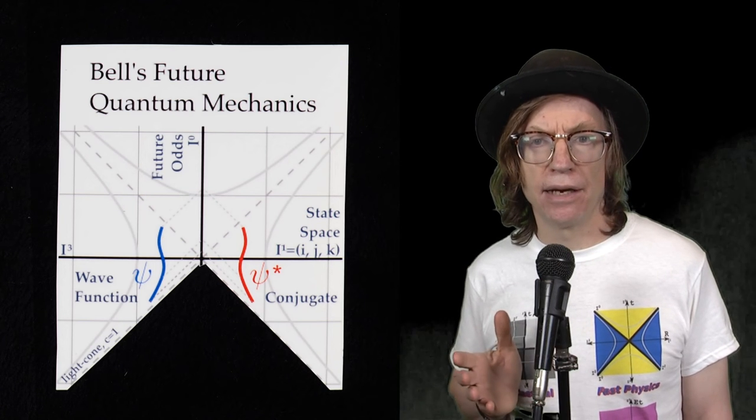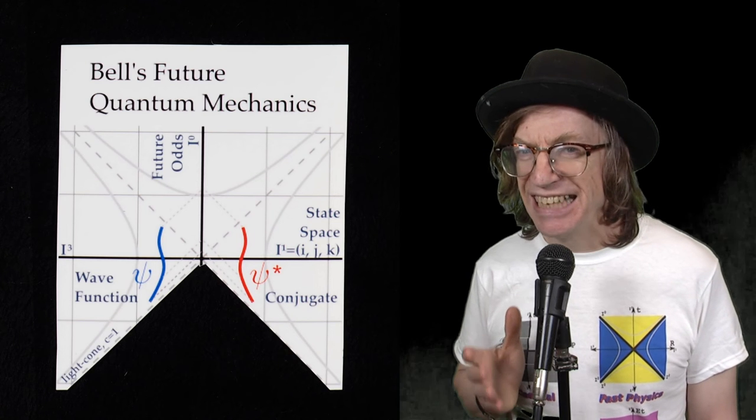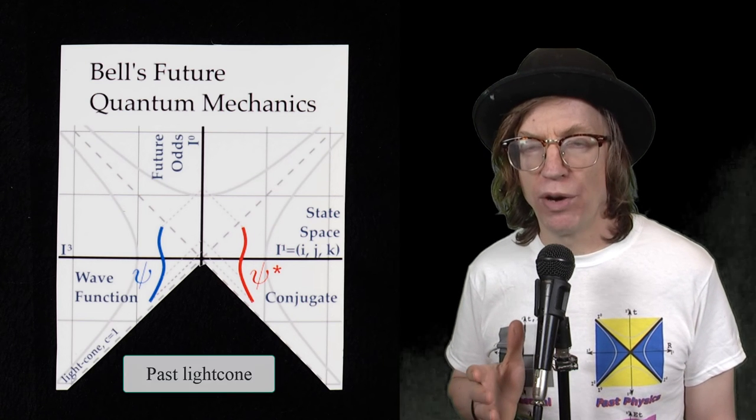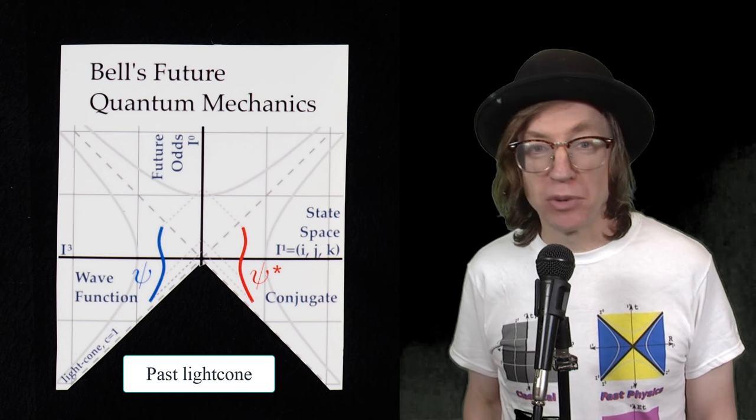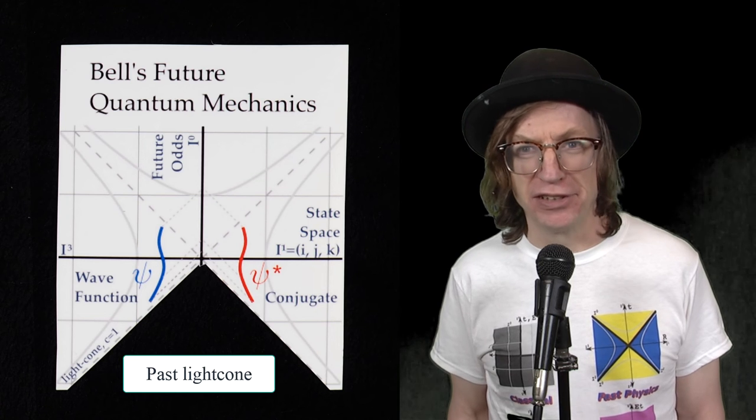Well, here's an idea. Let's delete the past light cone where those local variables live. At least while we're doing quantum mechanics and no other kinds of physics.